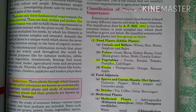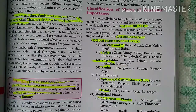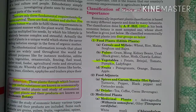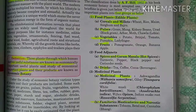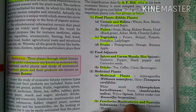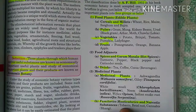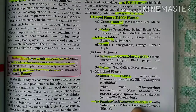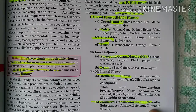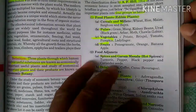Under food adjuncts, there are three types: first, masticatories — things we chew, like betel nut (supari); second, fumitories — things we smoke, like tobacco; and third, narcotics — such as cannabis (bhang) and opium (afeem).